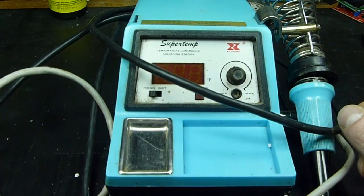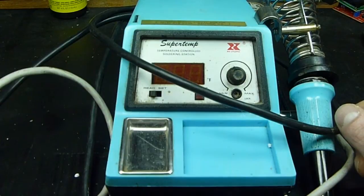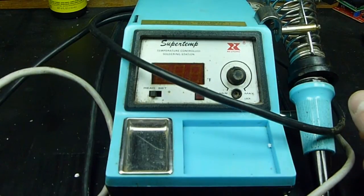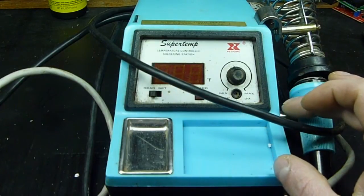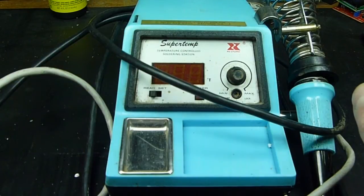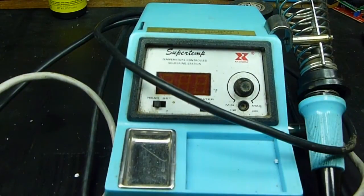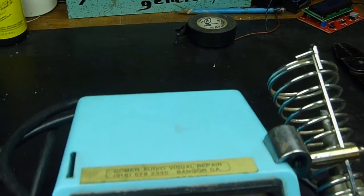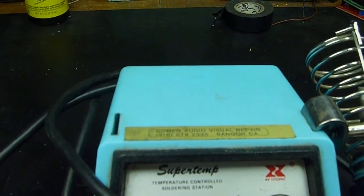I picked this up actually on eBay for 45 bucks, free shipping. There were two of them offered. There was this one and an ESR model or something, which I'm guessing has something to do with electrostatic dissipation so it won't damage sensitive components. This was originally from Comer Audio Visual Repair in Bangor, California.